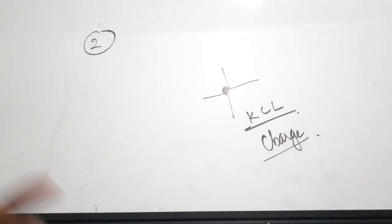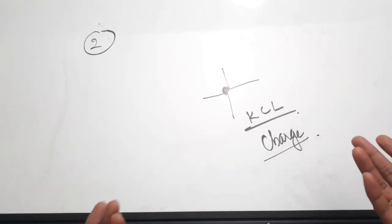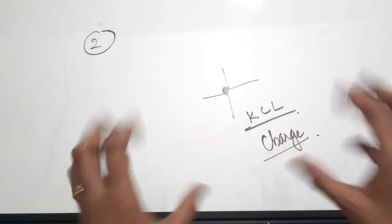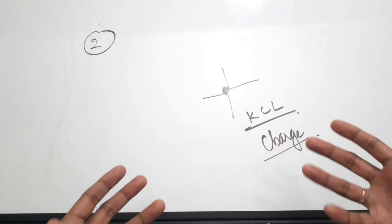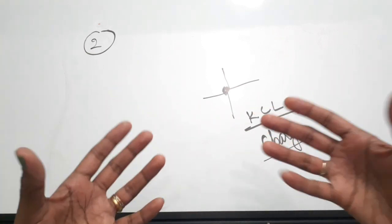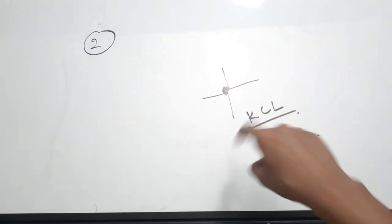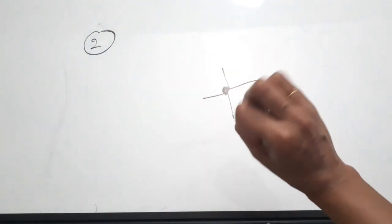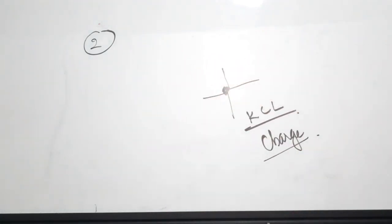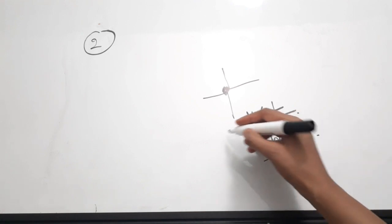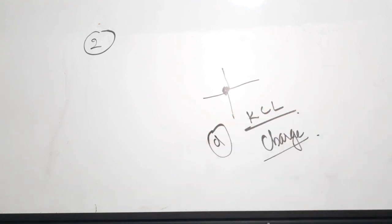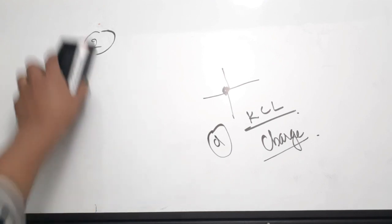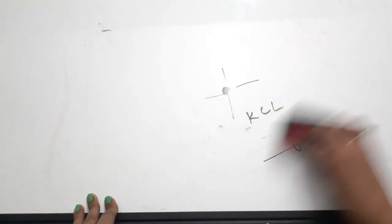The net charge coming to the node is equal to the net charge flowing out of the node — which is represented by current. So the correct answer for question two is option D: charge.